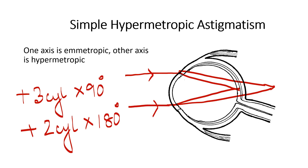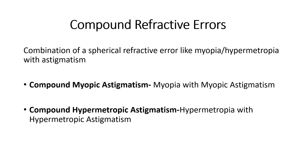So far we have discussed simple spherical errors — simple myopia and simple hypermetropia — and simple astigmatic errors — simple myopic astigmatism and simple hypermetropic astigmatism. Now we will proceed to talk about compound refractive errors, which means a combination of a spherical refractive error like myopia or hypermetropia with astigmatism. These are of two types: compound myopic astigmatism and compound hypermetropic astigmatism.